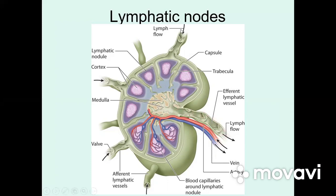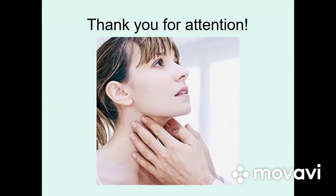Afferent lymphatic vessels bring lymph into the lymphatic nodes, through which lymph goes through the cortex and medulla, then continues through the efferent lymphatic vessels which begin at the level of the hilum of the lymphatic node. Thank you for your attention.